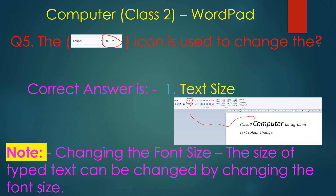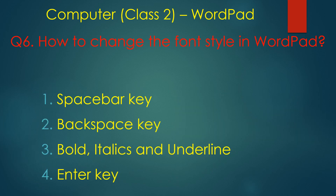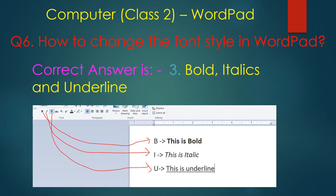The size of typing text can be changed by changing the font size. To change the font style in WordPad, there are font styles such as bold, italic, and underline. You select the text and click bold to make it bold, italic to make it italic, and underline for underline.